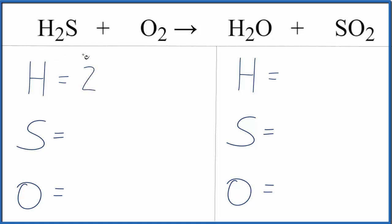Hydrogen, we've got two of those. Sulfur, one. Oxygen, two. Over on the product side, we have two hydrogens, one sulfur, and one oxygen. Make sure you count these two here as well, because we have a total of three oxygen atoms on the product side of the equation.